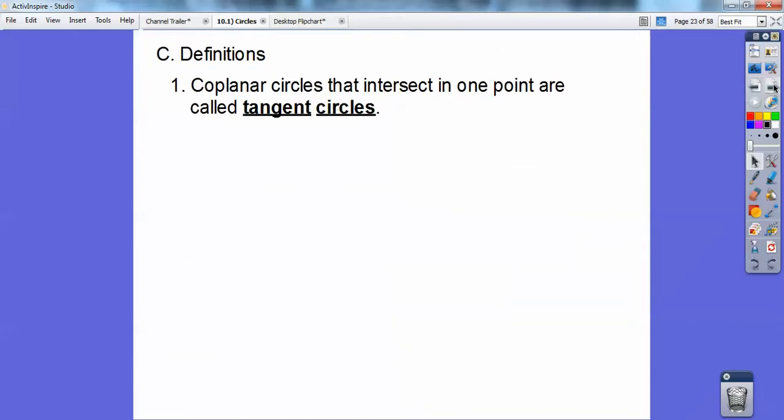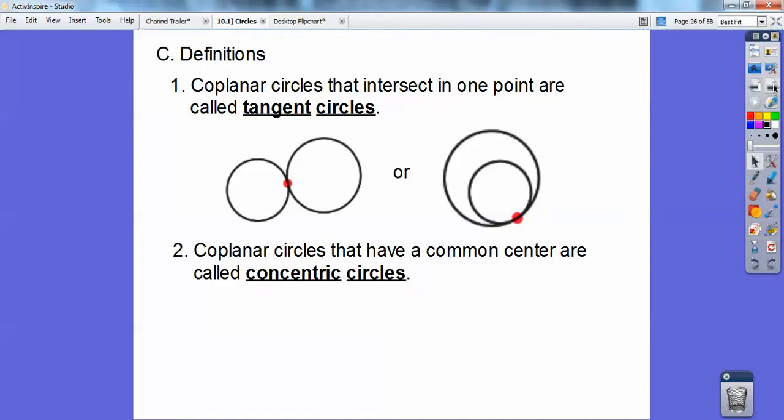So a couple of definitions. Coplanar circles that intersect in one point are called tangent circles. Those circles are tangent to each other, so they're tangent circles. Coplanar circles that have a common center are called concentric circles, like a dart board, or like the ripples in the water when you throw a rock in it.